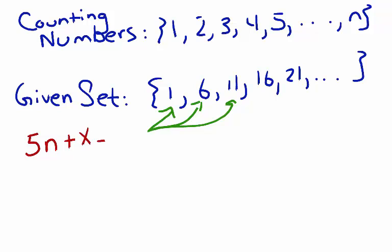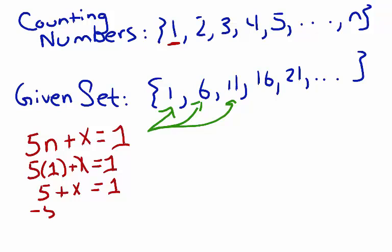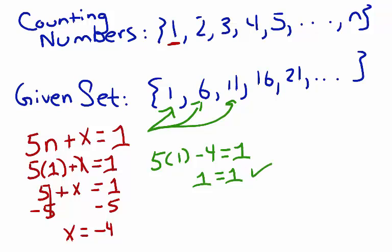When five n plus x equals one, we can take our counting number one and substitute it in. Five times one plus x equals one. That gives us five plus x equals one. Then we subtract five from both sides. x equals negative four. In other words, five times one minus four equals one, which gives us one equals one. So that statement works.